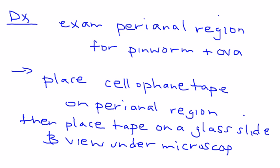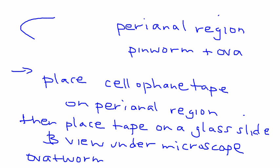The ova will essentially look like an oval with a curled up larva inside, like that.